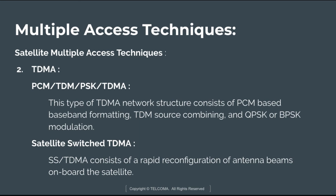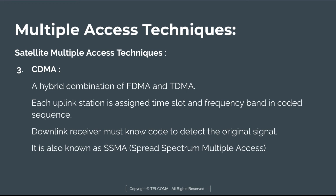TDMA is further divided into PCM TDM PSK TDMA and Satellite Switched TDMA (SS-TDMA). PCM TDM PSK TDMA is a type of TDMA network structure consisting of PCM-based baseband formatting, TDMA source combining, and QPSK or BPSK modulation; this technique is used in VSAT networks. SS-TDMA consists of rapid reconfiguration of antenna beams on board the satellite, providing additional levels of access capabilities over basic TDMA.